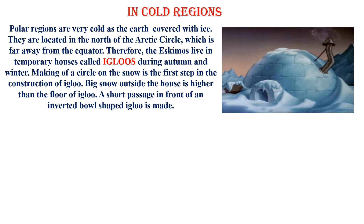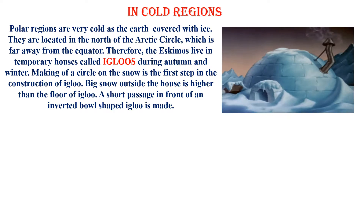During autumn and winter time, making a circle on the snow is the first step in the construction of an igloo. Big snow outside the circle is higher than the floor of the igloo. A short passage in front of an inverted bowl-shaped igloo is made.